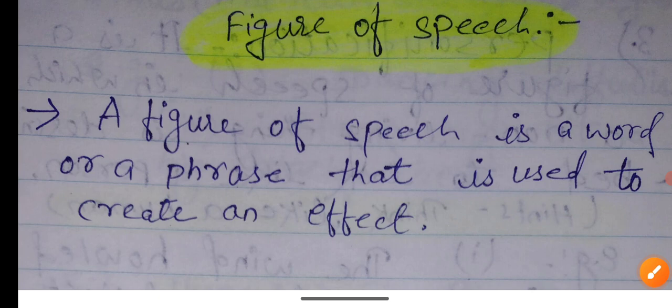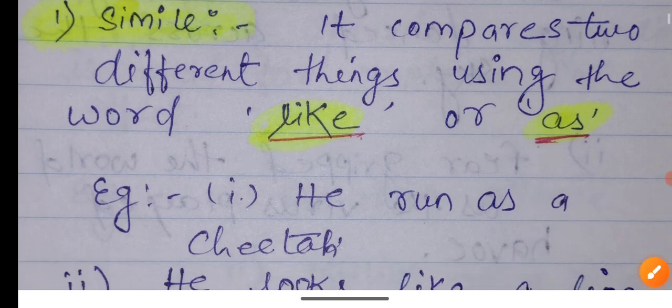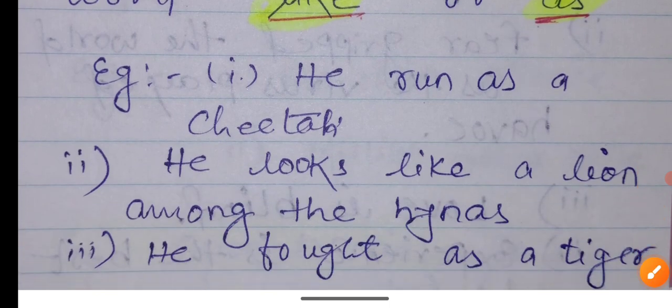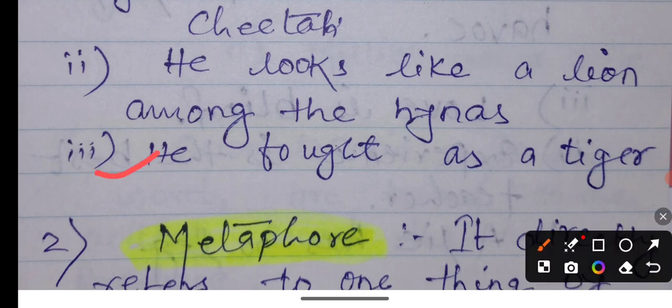First one, the type of figure of speech: Simile. It compares different things using the words 'like' or 'as'. If you see 'like' or 'as' in a sentence, then you know it's a simile. For example, he runs as a cheetah. He looks like a lion.